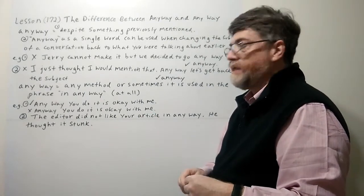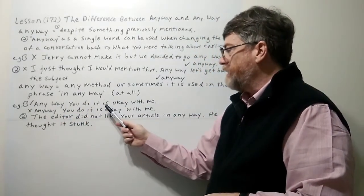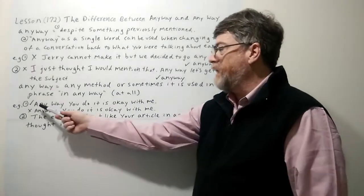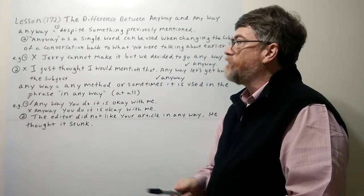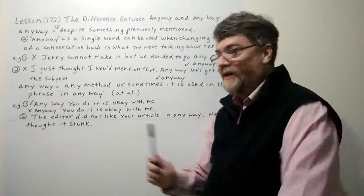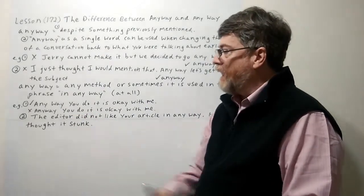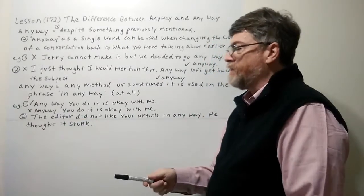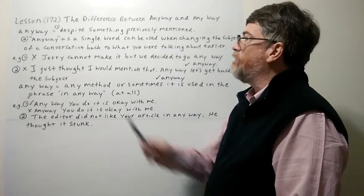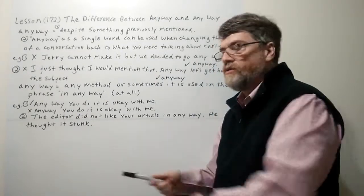Let's look at the first example here with the checkmark first. 'Any way you do it, it is okay with me.' Here, 'any way' as two words is correct, meaning 'any method is okay with me.' If you mistakenly used the one-word 'anyway,' that would be wrong, because that form refers to 'despite something mentioned' — but here you really mean 'any method you use is okay with me.'